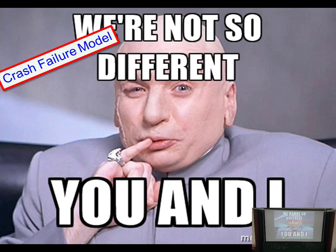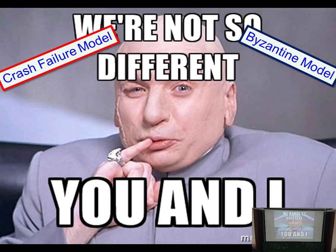There's also a much more demanding model called the Byzantine model. In the Byzantine model, the adversary can lie to you — instead of remaining silent at the wrong time, the adversary can say the median was 24 when it wasn't. If the adversary controls several players, the players can conspire and do the worst possible thing for your algorithm. Byzantine players can make you do wrong decisions, make you run forever, and there's no end to the evil they can do.